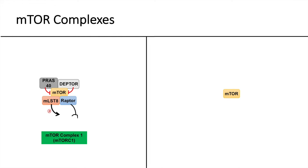The other mTOR complex is similar in that it also contains the mTOR protein, but one of the main differences is that it has RICTOR instead of RAPTOR. RICTOR stands for rapamycin-insensitive companion of mTOR, and it allows mTOR complex 2 to actually bind to its substrate — making it analogous to RAPTOR in mTOR complex 1.